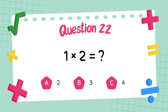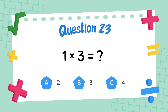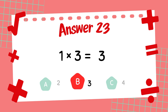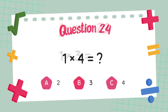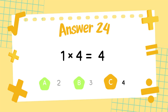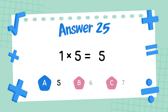What is 1 times 2? The answer is 2. What is 1 times 3? The answer is 3. What is 1 times 4? The answer is 4. What is 1 times 5? The answer is 5.